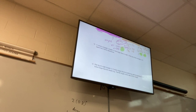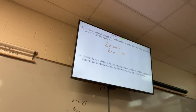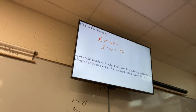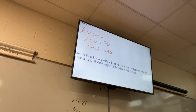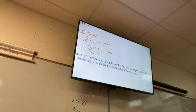For B: a rectangle's length is three feet longer than its width, so L = W + 3. The area is 70, so L times W equals 70. Substitute: (W + 3) × W = 70. Distribute the W and subtract 70: W² + 3W − 70 = 0.